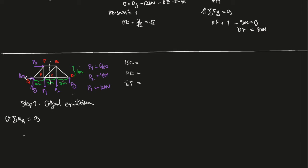Sum of the moments at A, counterclockwise is positive direction. That means P1 times 3 meters, plus P2 times 6 meters, plus P3 times 3 meters.